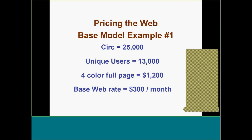Let me give you an example. If your magazine's circulation is 25,000, your unique users are 13,000, and the cost of a full-page ad is $1,200, then your web ad should sell for around $300 per month. That's selling it on a flat rate basis — which most media companies find success with — giving advertisers a certain number of impressions in a 30-day period. If you want to sell on a cost-per-1,000 basis, divide your total monthly ad impressions by 1,000 and back into this number.